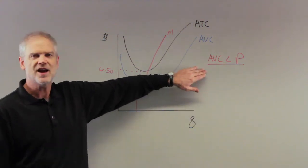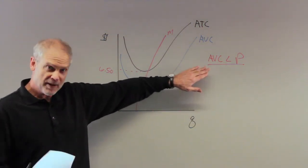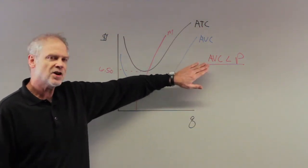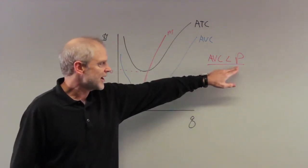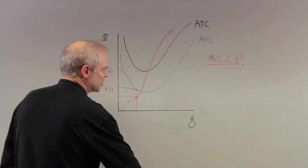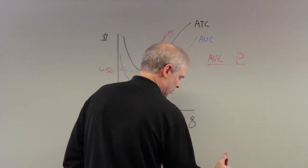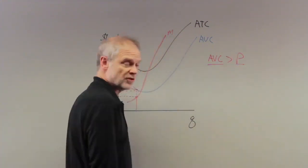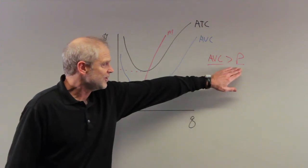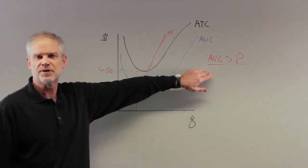This is, you're done. If you can't meet payroll in a sense, meaning you can't cover your average variable cost, the price is below your average variable cost, then you are in big trouble. Every unit you sell, you can't even pay the labor to produce it.